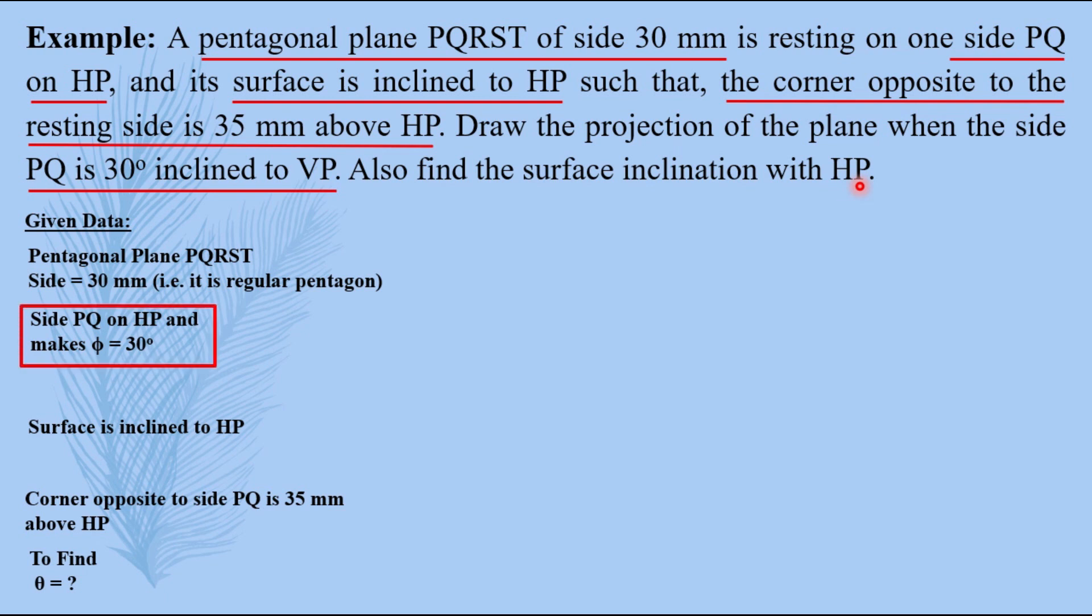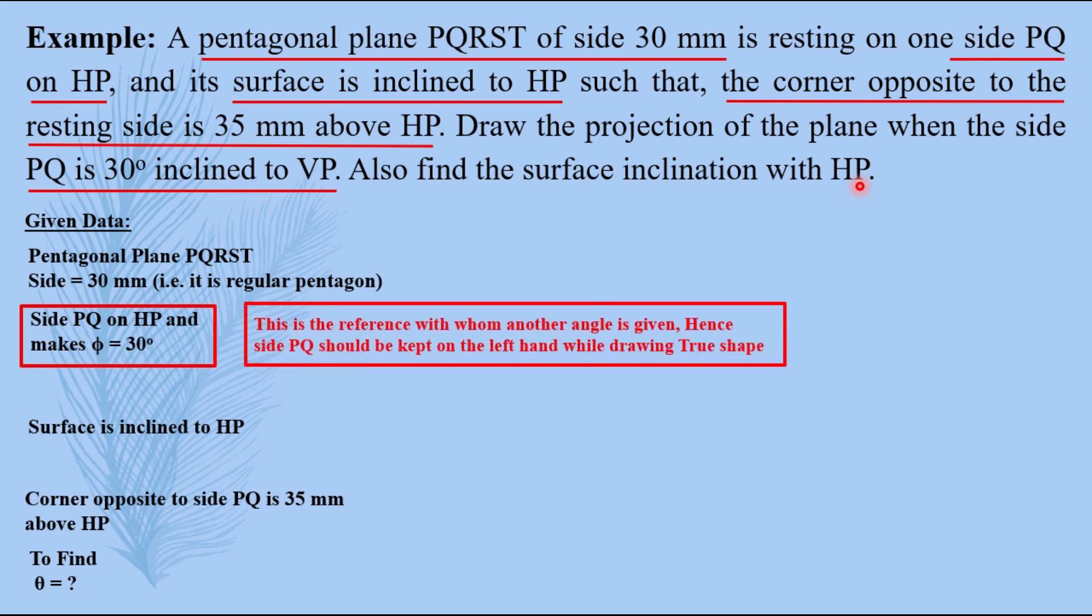Now this is the resting side which has to be taken on HP and it makes an angle phi 30 degrees with VP. This reference has to be taken on the left hand side while drawing the true shape. Also the surface inclination is with HP that means the true shape will be visible in top view.